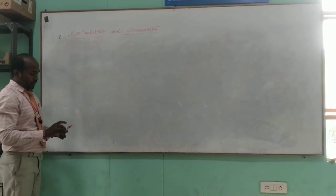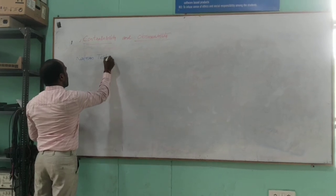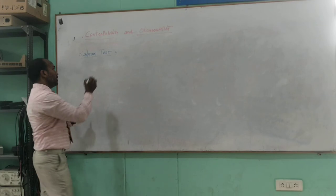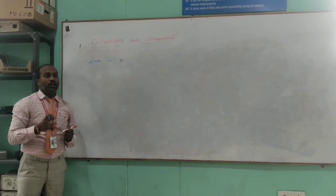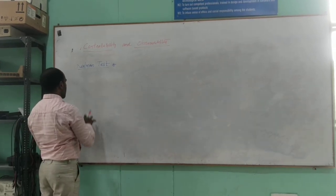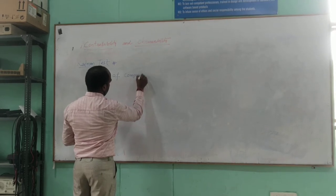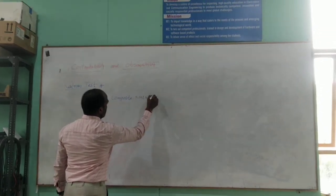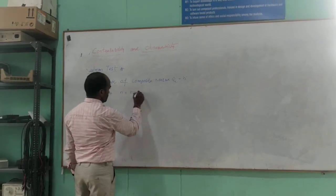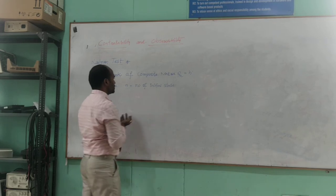So we will start with controllability — the Kalman test for controllability. Kalman is the name of a scientist who composed these two concepts and gave the test, which is why this test is known as the Kalman test. According to this Kalman test, any given system is said to be controllable if and only if the rank of a composite matrix Qc is equal to N, where N is the number of state variables.